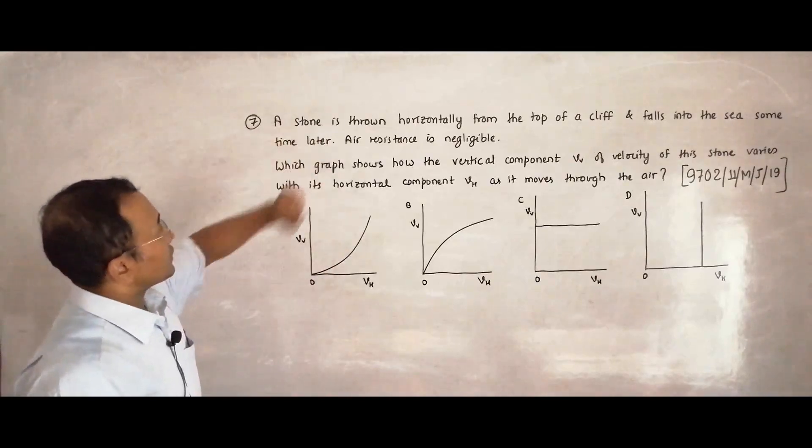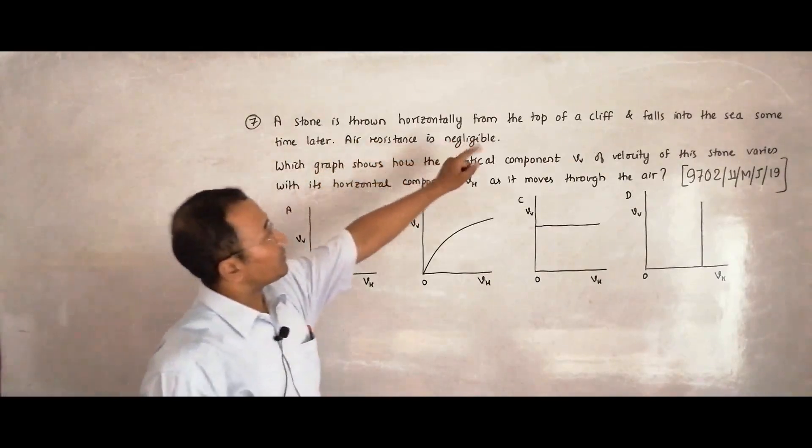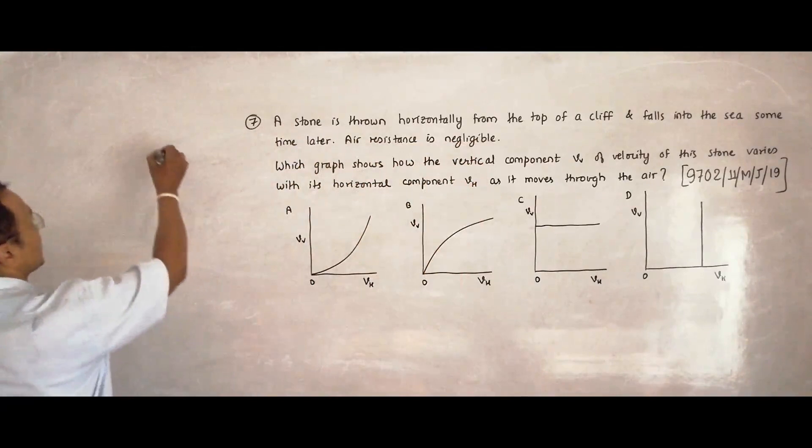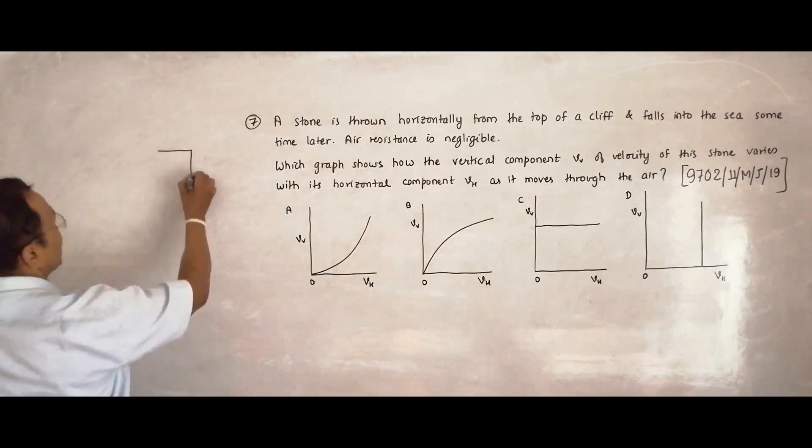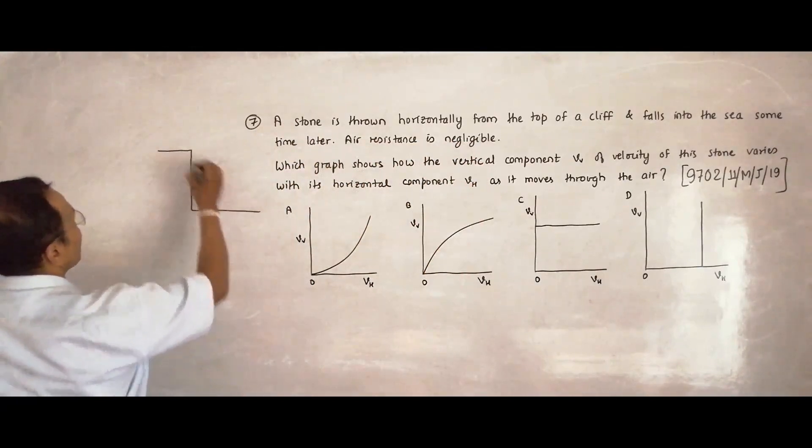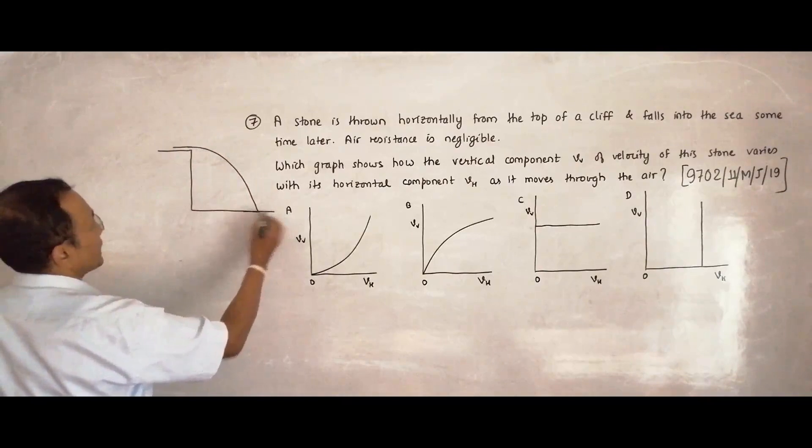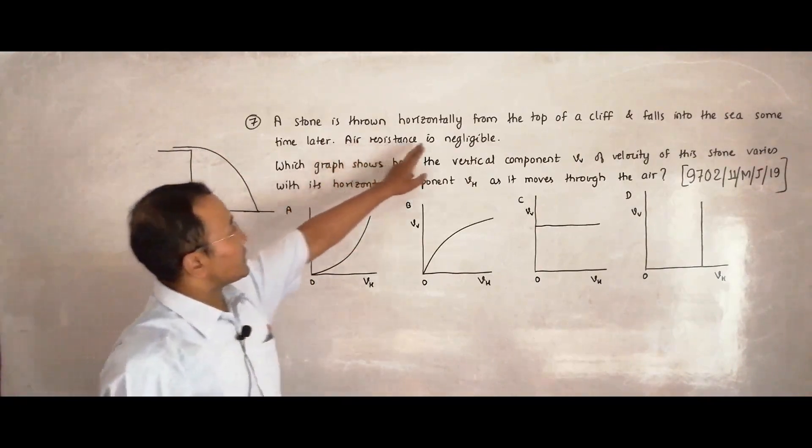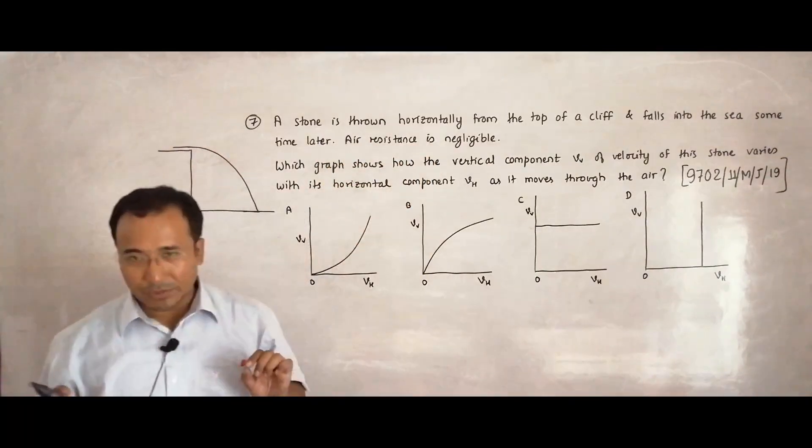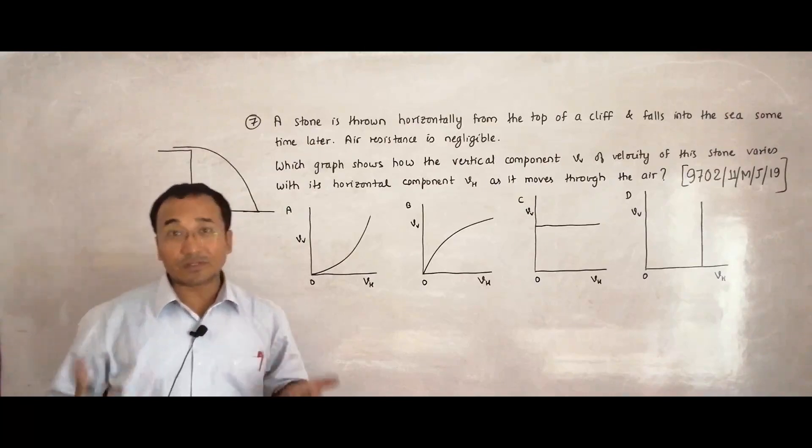So it says that it is about a projectile. It says a stone is thrown horizontally from the top of a cliff. So it means that this is the top of the cliff and we are throwing a stone like this, somewhat like this and it falls into the sea sometime later, falls like this, like this and air resistance is negligible.